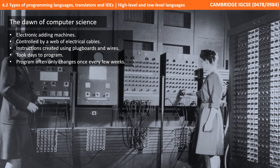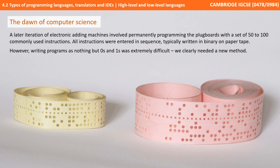These programs were also often only changed once every few weeks due to how complicated it was. A later iteration of electronic adding machines involved permanently programming the plug boards with a set of around 50 to 100 commonly used instructions. All instructions were entered in sequence, typically written in binary on paper tape.